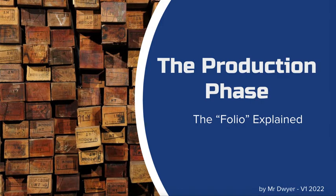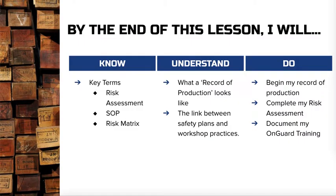Welcome to the production phase video, which fits into the folio explained series that we've been developing to help you understand how to attack each aspect of the folio. In this video we're going to spend quite a lot of time looking at the safety aspects that fall within the record of production and the production phase — specifically the terms risk assessment, SOP, and risk matrix. We'll give you a demonstration of what a record of production actually looks like, the link between safety plan and workshop practices, and by the end you'll be able to do your risk assessment, document your OnGuard training, and get your record of production happening.